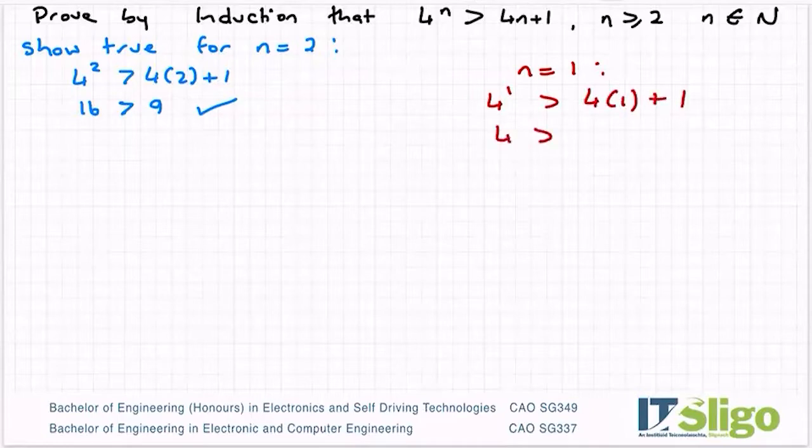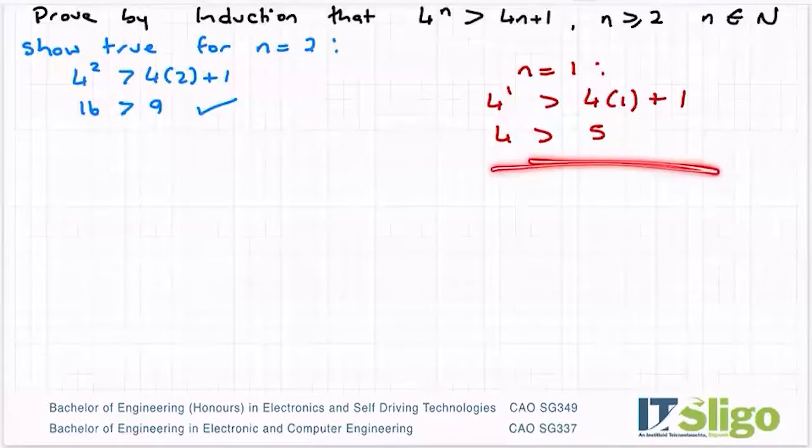And you'd have got 4 is greater than 5, which doesn't hold true. So if you get a condition where it's not true and it's a proof by induction, then check your starting number, because chances are you've either mathematically made a mistake or started at the wrong number.